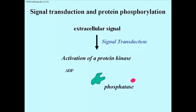To control how intensely and how long the cell responds to the signal, there are specific phosphatase enzymes that catalyze the hydrolysis of the phosphates off of the activated proteins when the response is no longer needed.